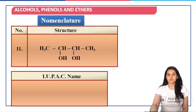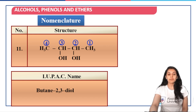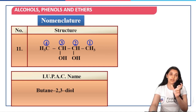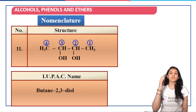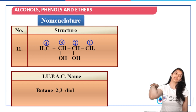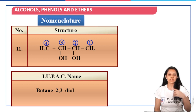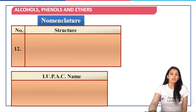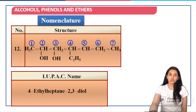Next is this structure — pretty simple. It's going to be 1, 2, 3, 4 carbon atoms, so it's going to be butane-2,3-diol. Remember: in butane, 'ane' will retain the 'e' at the end because we are writing 'diol' not 'ol'. Whenever you have 'di' or 'tri' in the suffix, you do not remove the 'e' from 'ane' or 'ene'. Next structure: you will first identify the parent chain and the name would be 4-ethylheptane-2,3-diol.